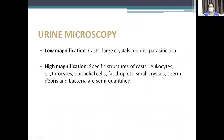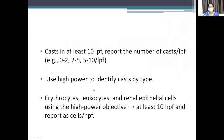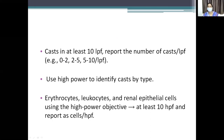Under low magnification, you see casts, large crystals, debris, and parasitic ova. Under high magnification, you see specific structures of casts, leukocytes, erythrocytes, fat droplets, crystals, sperm, debris, and bacteria. At least 10 low-power fields must be examined to determine the number of casts per low-power field. Use high power to identify which type of cast it is.